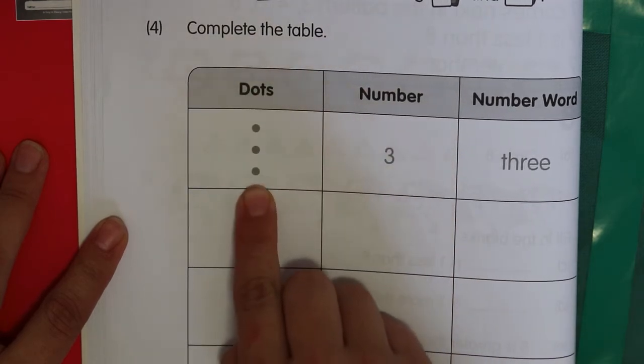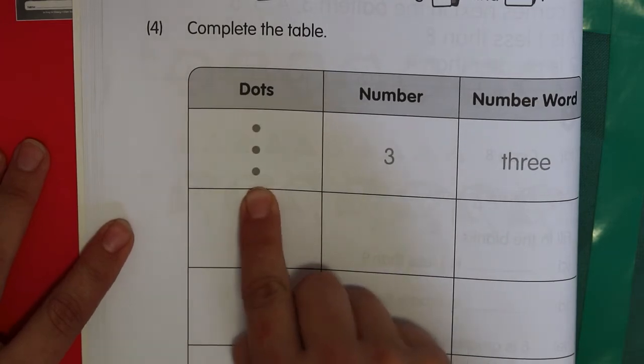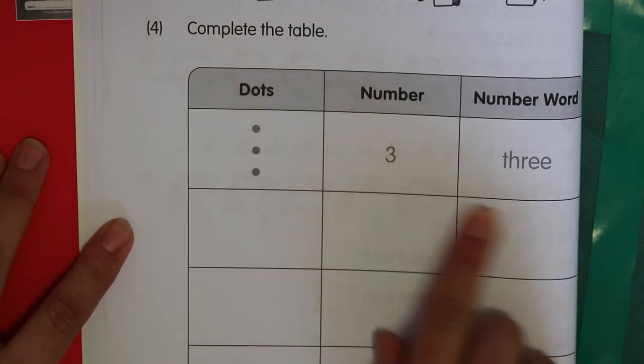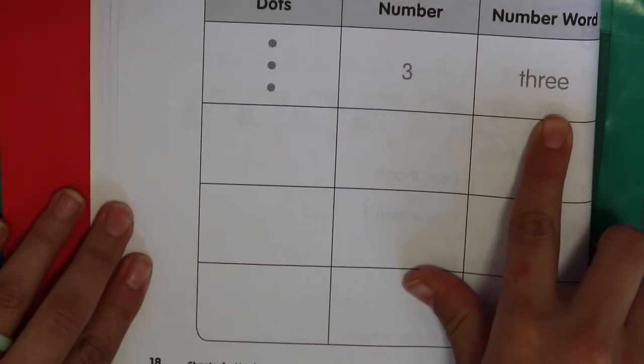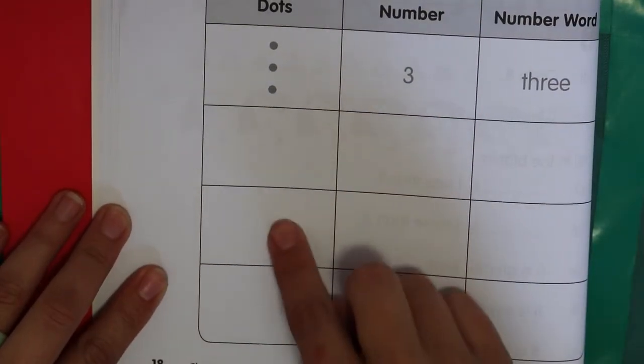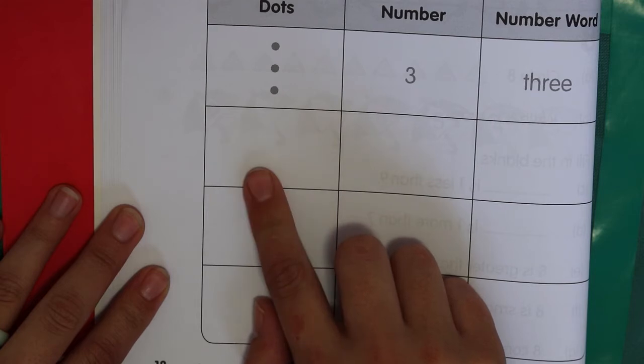Complete the table. So dots would be 3. If I threw the dice and I got 3 dots, I would have drawn 3 dots. I would have written the number 3, and the word three. So if you do have dice that you want to throw, you can see which ones you get and fill them in. Or just choose any numbers. So you could do 8, or 6, or 10.